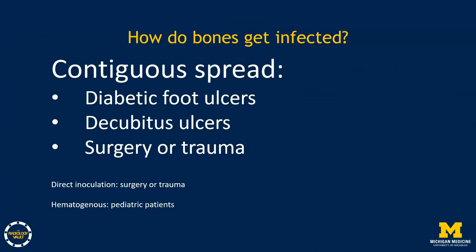The vast majority of the time in adults, bone infection comes from contiguous spread from adjacent tissues, which usually means diabetic foot ulcers, decubitus ulcers, or spread of infection after surgery or from trauma. Much less commonly, bones can get infected by direct inoculation, like from infected hardware or an open fracture, or from hematogenous spread, which is much more common in pediatric patients.